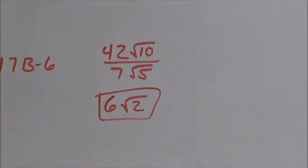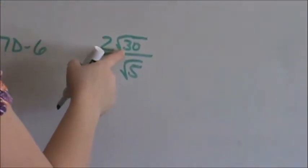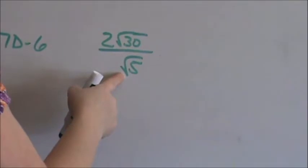Now on to 17d number 6. 2 times square root of 3 divided by square root of 5. Again, what coefficient is in front of this 5?